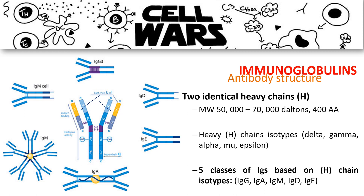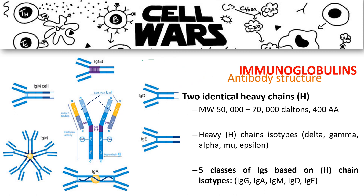Two scientists notably conceptualized the structure of antibodies: Edelman and Porter. Edelman mostly characterized the centrifugation characteristics of immunoglobulins, while Porter studied the ability of certain proteolytic enzymes to cleave the antibody structure into different parts. Because of their work, we are able to characterize the different properties of our antibodies depending on the type of heavy chains present.